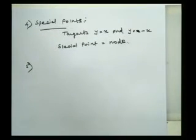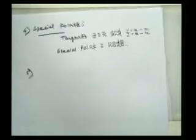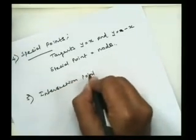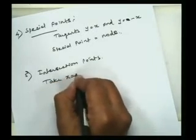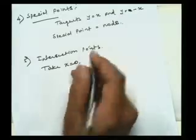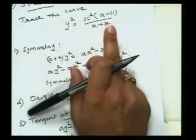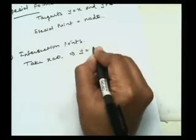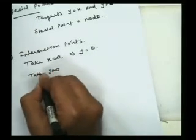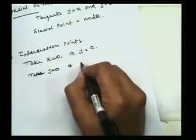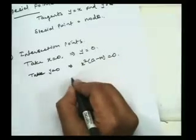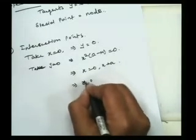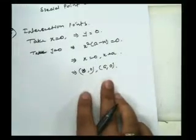Next point: intersection with the coordinate axis. To find the intersection with the coordinate axis, take x = 0 and y = 0 respectively. If we take x = 0, we get y = 0. If we take y = 0, we get x²(a − x) = 0, giving x = 0 and x = a. So there are two intersection points with the coordinate axis: (0, 0) and (a, 0).